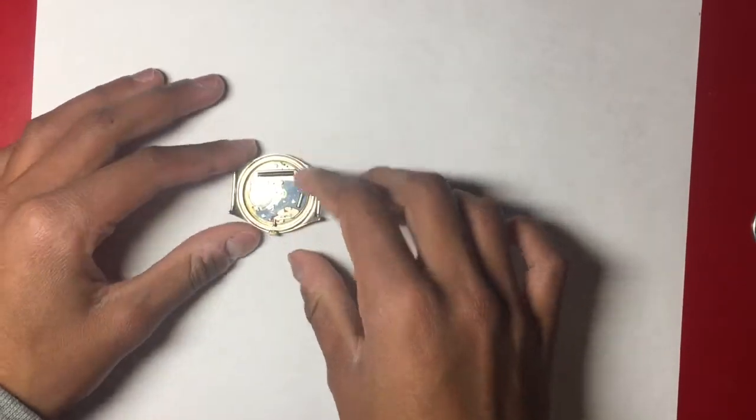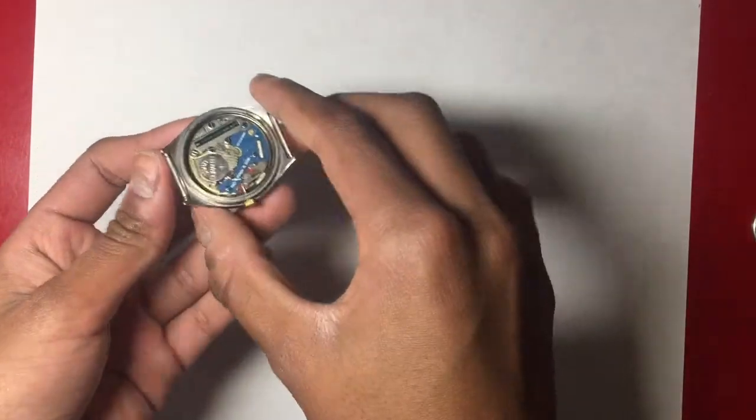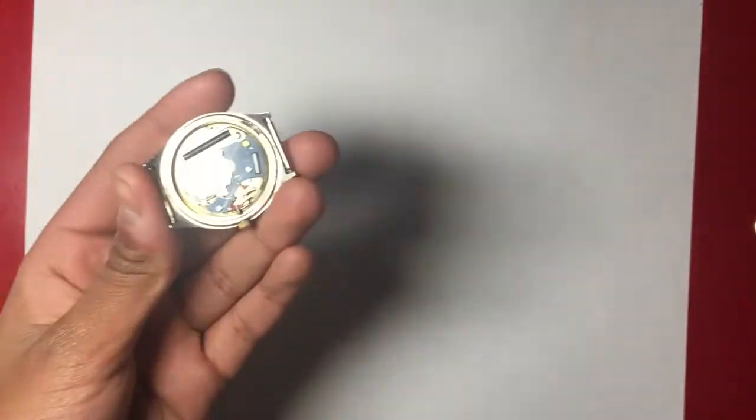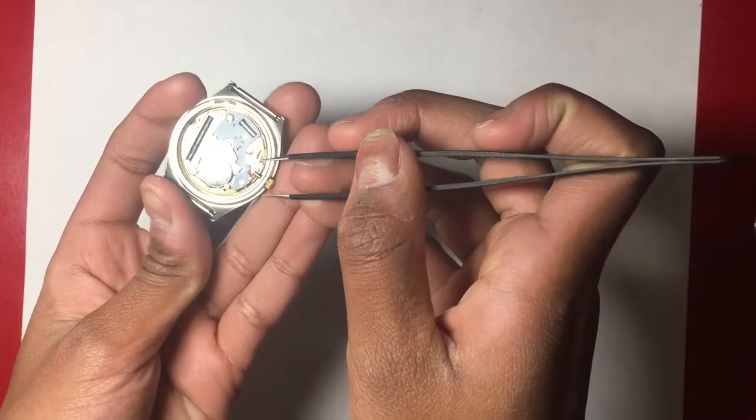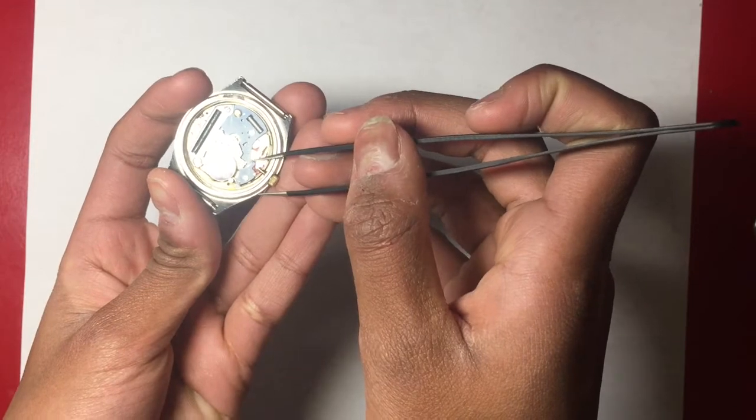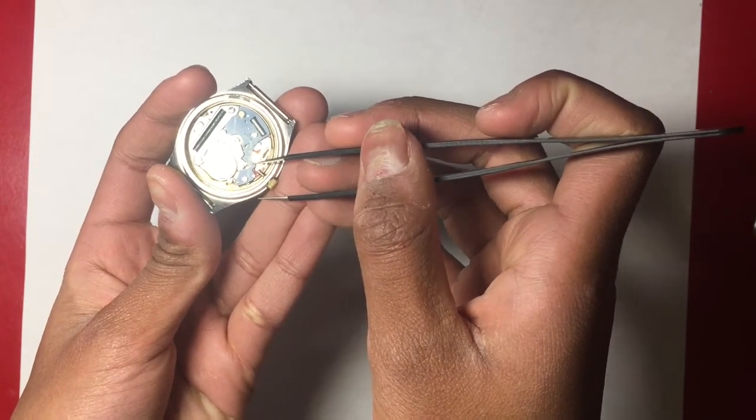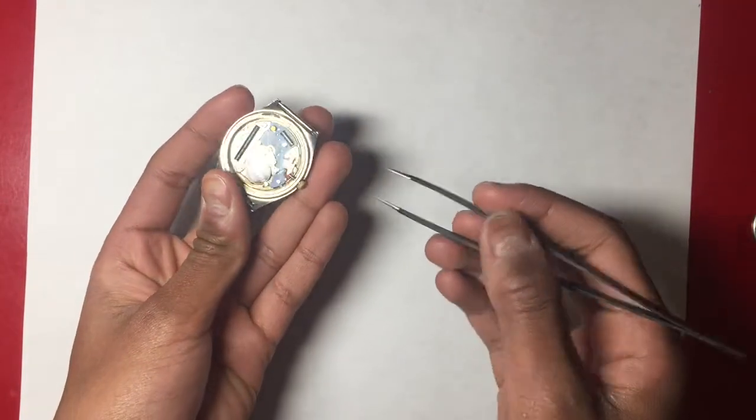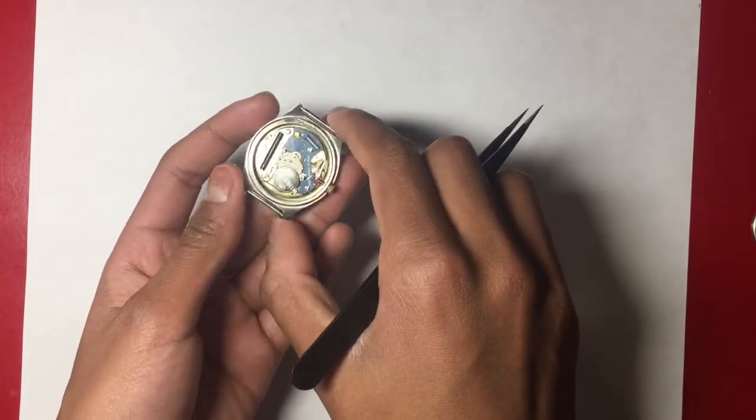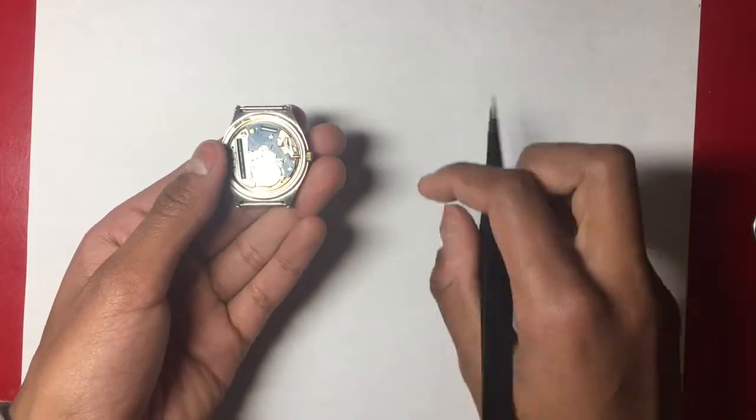Now we need to remove the crown in order to get it out of the watch case and to do that the case itself actually points out a place it says press here to release stem. Usually there would be a little indent right there where you could push and this thing would just pull out, but I spent around two hours looking for that pin and I could not find it.